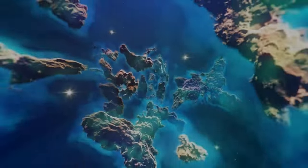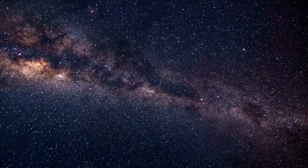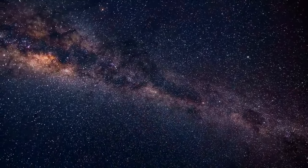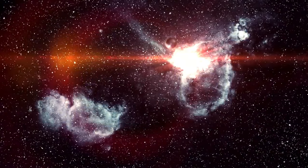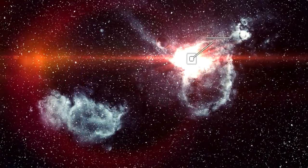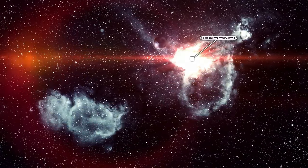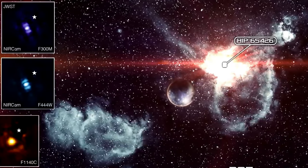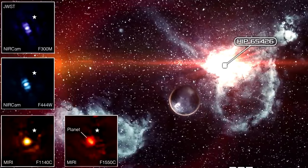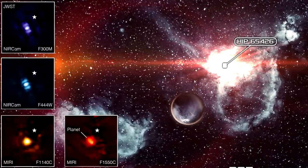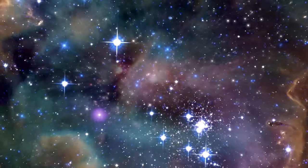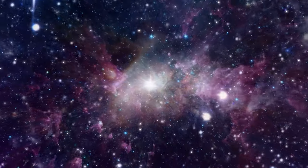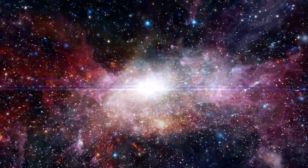First exoplanet photographed. Webb has for the first time taken a direct image of a planet that is outside the solar system. It orbits the star HIP 654-26 in the constellation Centauri at a distance of 385 light-years from us. The telescope took four incredibly detailed images of the exoplanet, which is 5 to 10 times more massive than Jupiter. According to scientists, it is only 10 to 20 million years old, compared to the Earth, which is 4.5 billion years old, it is just a baby.